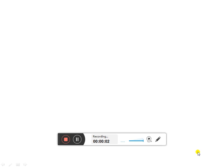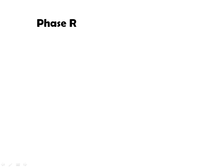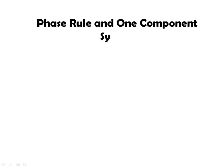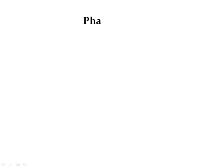Welcome dear students. Today we are going to discuss the topic phase rule and one component system. Phase rule is related with the degrees of freedom. By using this phase rule we can calculate degrees of freedom, meaning how many variables are required to describe your system completely.